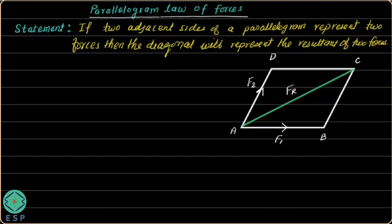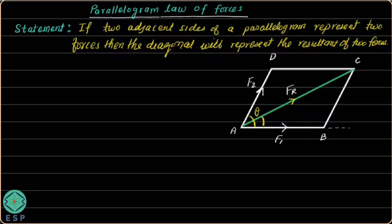Now we have to use this law to find the magnitude as well as the direction of the resultant. The angle between the two forces is theta, and the resultant force is AC. The angle made by the resultant with the horizontal is called alpha, which represents the direction of the resultant. We need to find the magnitude as well as the direction of the resultant force FR.